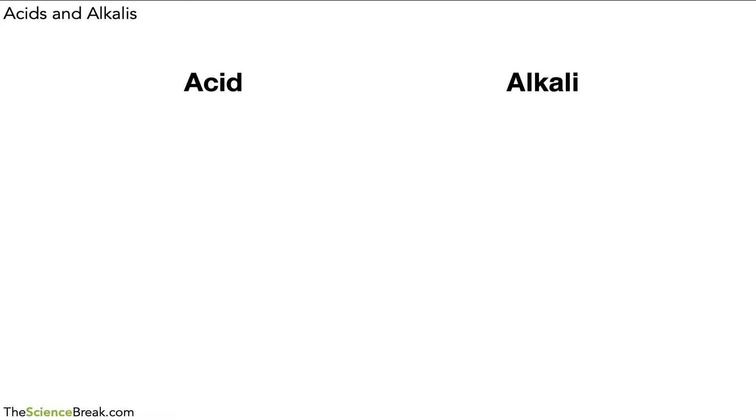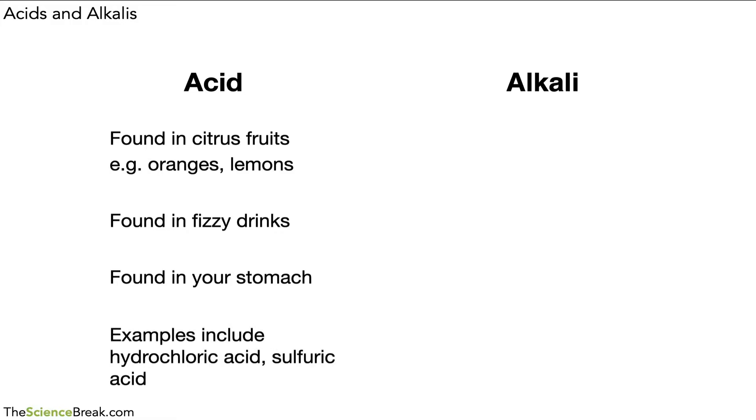We could start with a couple of places where we can find acids. In terms of acid, it's found in what we call citrus fruits, such as oranges and lemons. It's also found in fizzy drinks. All fizzy drinks have carbon dioxide in them which makes them acidic. It's found in living things as well. In your stomach you will have acid. And a couple of examples of acids are hydrochloric acid and sulfuric acid. These are two that we very commonly work with in chemistry.